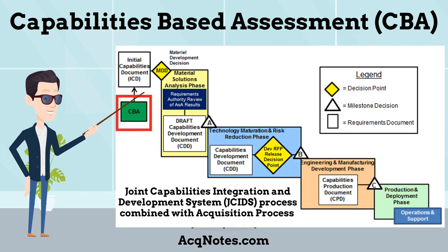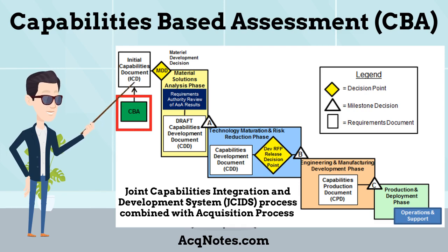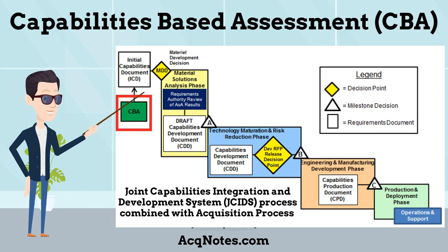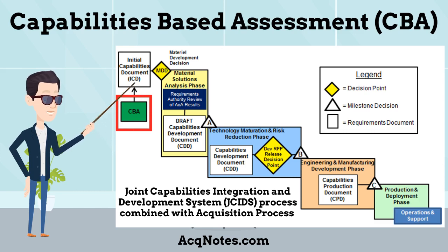When does the Capabilities-Based Assessment take place? The Capabilities-Based Assessment is the analysis portion of the Joint Capabilities Integration and Development System process, or what I call the JCDS process. It takes place at the very beginning of the process. The figure here shows the location of the CBA in the combined JCDS and acquisition process. The information developed in the Capabilities-Based Assessment is used to develop the first requirements document, the Initial Capabilities Document.